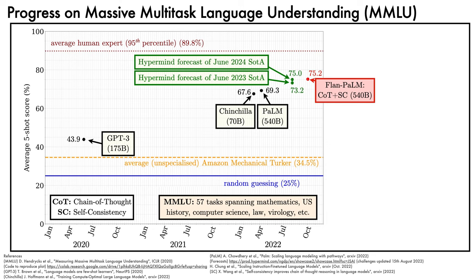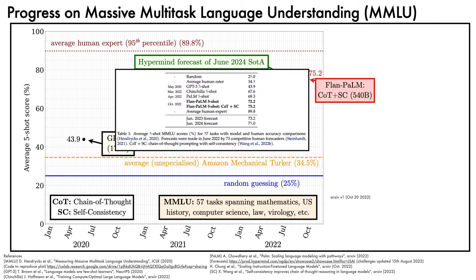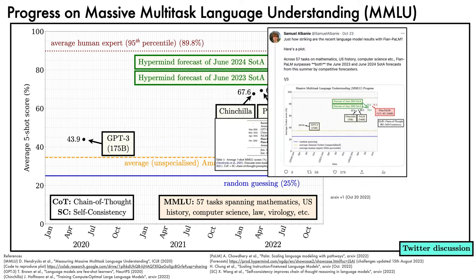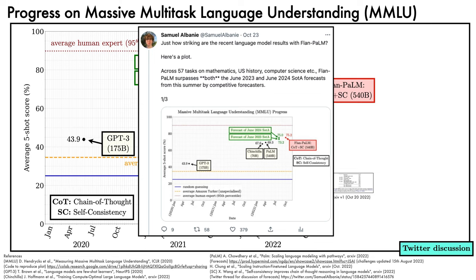At this point, the graph is a reasonable representation of key data points from Table 1 of the first version of the Scaling Instruction Fine-Tuning paper, which is itself a valid summary of relevant numbers. I shared a picture of a similar graph on Twitter, noting that these results are striking. Of course, the degree to which the progress is striking very much depends on the quality of the HyperMind forecast. Note that the original paper does not use language claiming that the results are striking — that was my phrasing and responsibility.